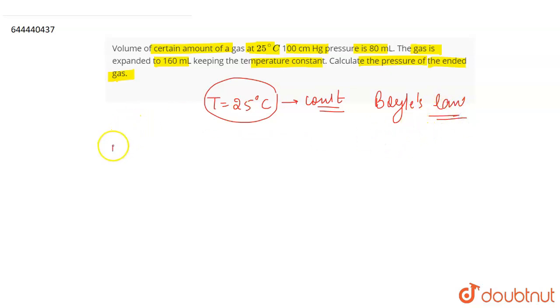So you are given pressure P1 as 100 centimeter Hg, you are given V1 as 80 ml. Then you are given the pressure P2, no you have to find it out. You are given a volume V2 and that is equal to 160 ml.